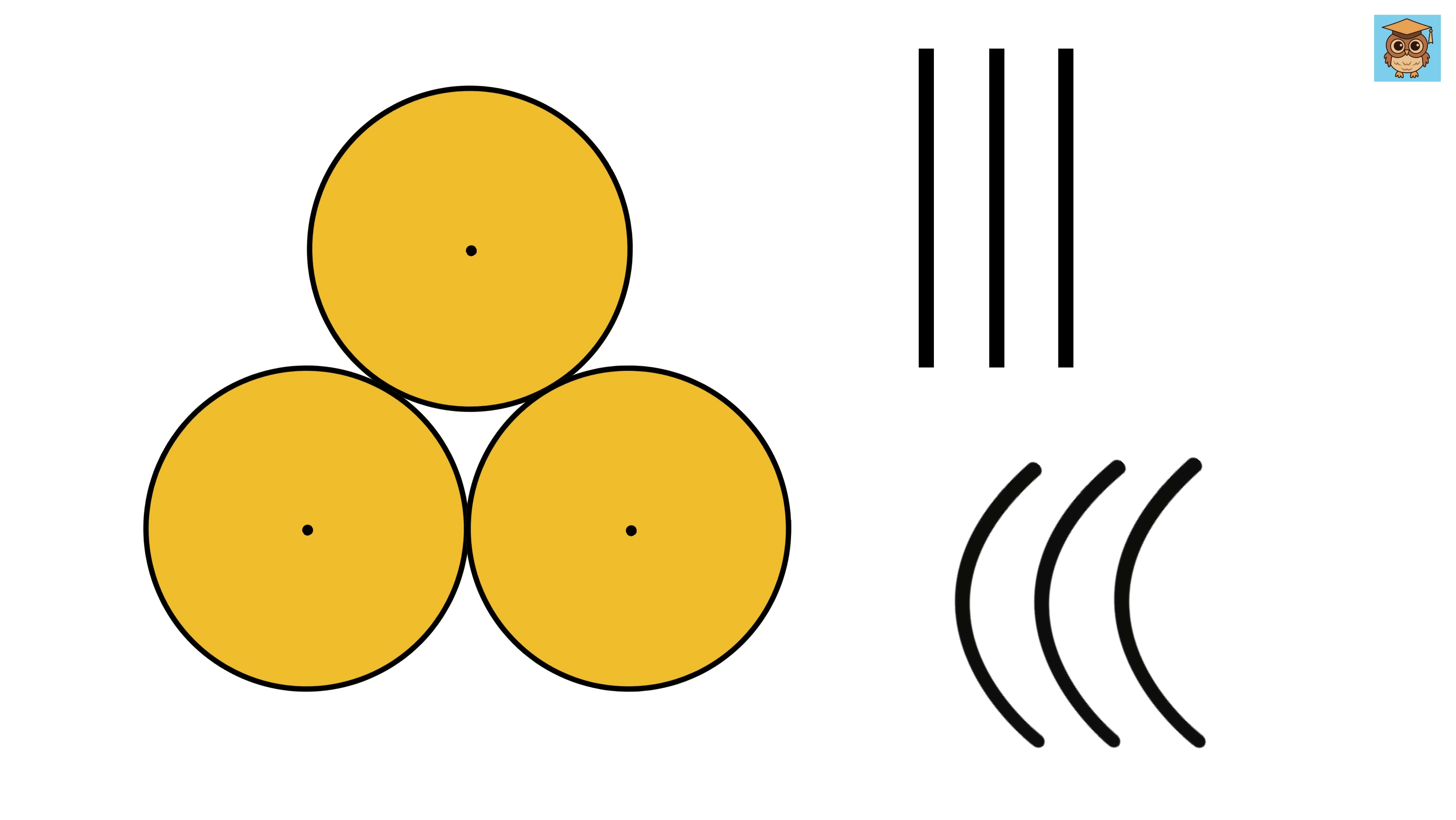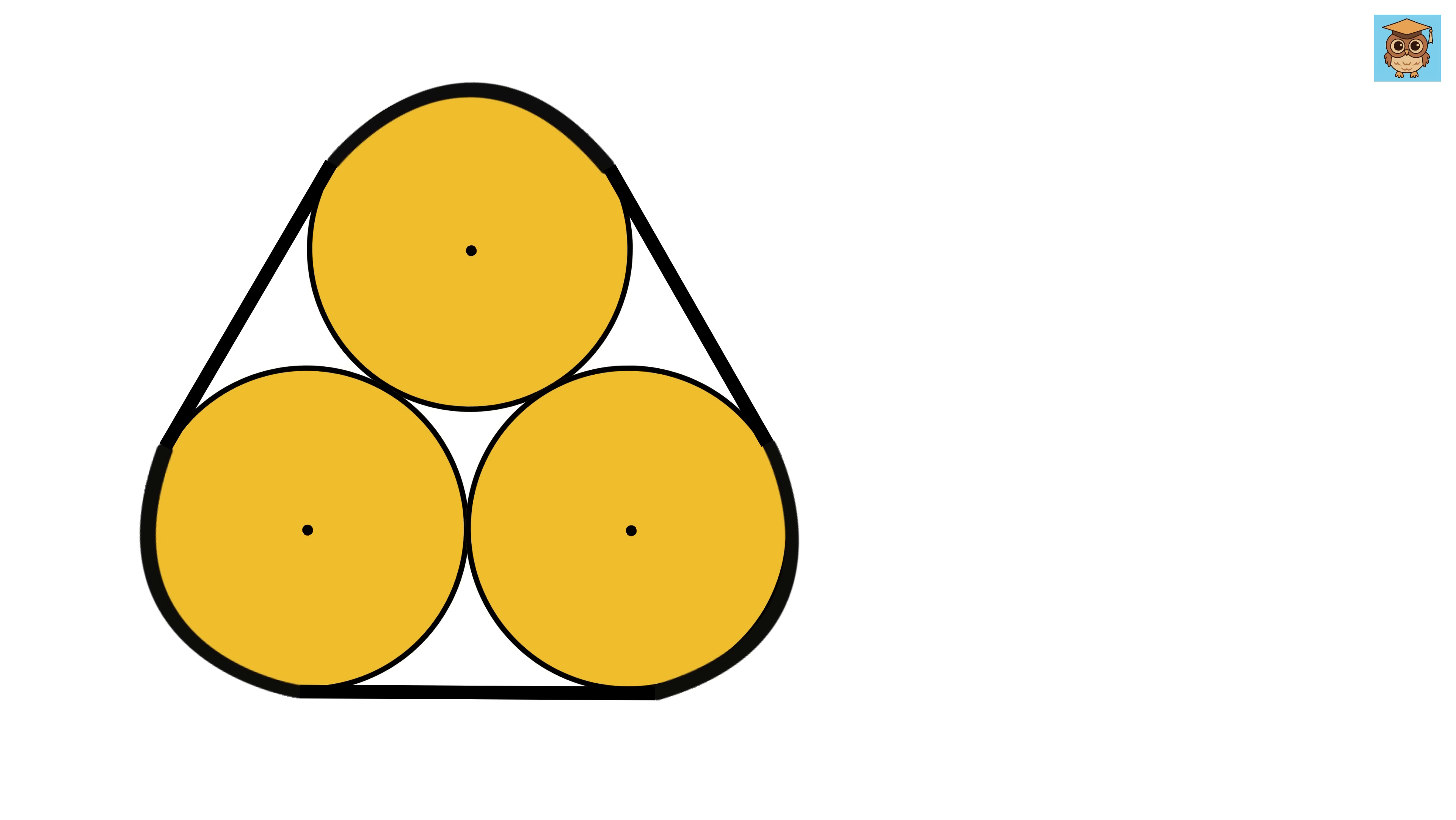When you connect their centers, the distance between the centers of any two touching circles becomes the sum of their radii. Since all three circles have radius one, the distance between any two centers will be one plus one, which is two.